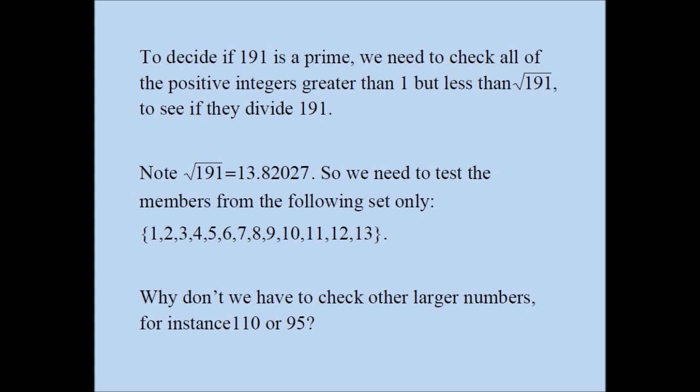That's all. 191 is a large number, we just need to test if the following numbers divide 191. If they don't, 191 is a prime. Why don't we have to check numbers like 110 or 95? So that's our question. Why do we just test these handful of numbers and if they don't divide 191, we claim that 191 is a prime?